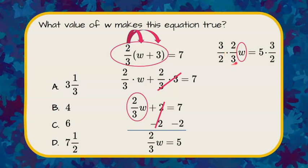The reciprocal of two-thirds is three-halves. Any value multiplied by its reciprocal is equal to 1. So three-halves times two-thirds is 1, or just W.